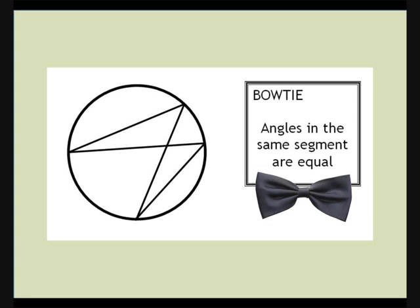The first one we normally meet is this one. Angles in the same segment are equal. I think it looks like a bow tie, but you can be the judge of that.